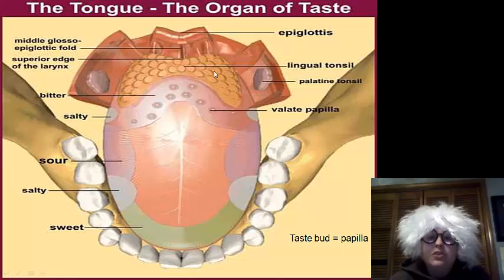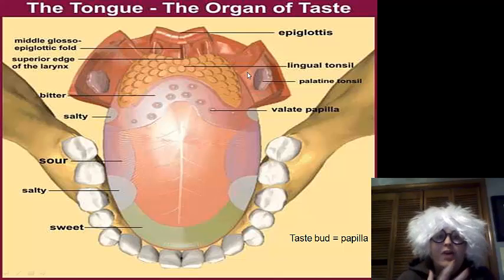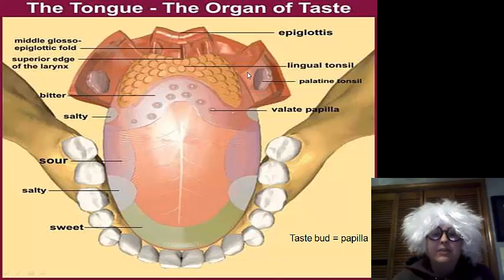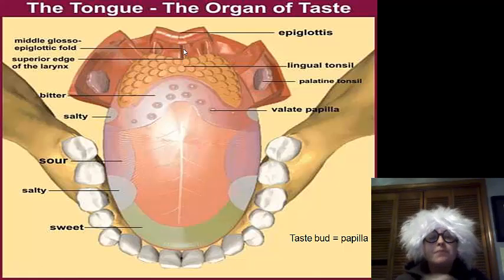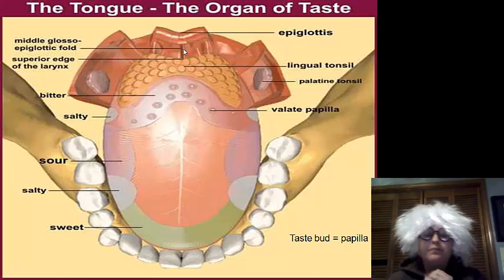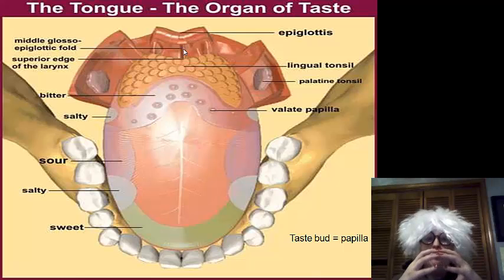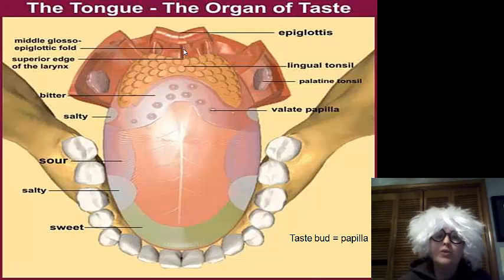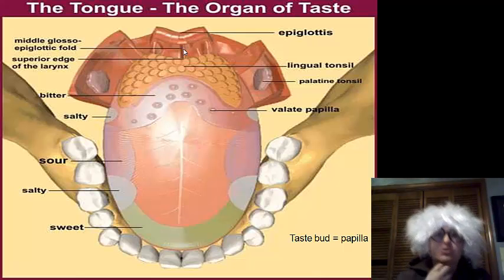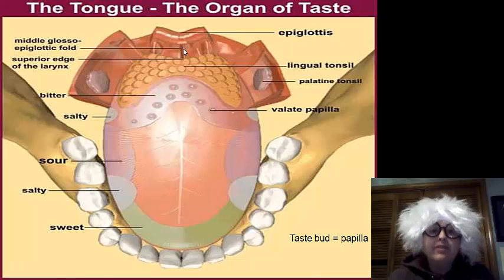In the back of the throat, you have your tonsils that help filter out bacteria. And you have your epiglottis — that hangy ball thing in the back of your throat — which is actually a bulbous sensor. It takes the food mass and checks its size to make sure you're not swallowing something too big. If it is too big, it will cause you to gag. So your epiglottis actually causes your gag reflex.